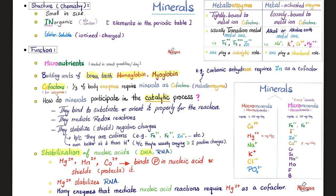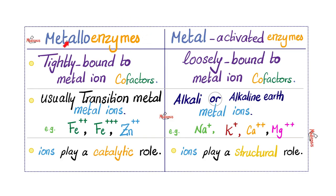Next, what's the difference between metalloenzymes and metal-activated enzymes? Metalloenzymes are tightly bound to the metal ion cofactor. These are enzymes tightly bound to the cofactor. But metal-activated enzymes are also enzymes loosely bound to the cofactor. Here, the cofactor is usually a transition metal ion, such as iron, zinc, copper, in the middle of the periodic table. But metal-activated enzymes are usually bound to cofactor, which are alkali or alkaline earth metal ions, on the left side of the periodic table: sodium, potassium, calcium, magnesium. These enzymes with their cofactor will play a catalytic role. But these enzymes will play a structural role.